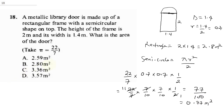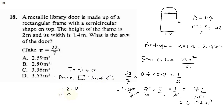To get the total area: total area = area of rectangle plus area of semicircle, which is 2.8 plus 0.77, giving us 3.57 meters squared. So the correct answer is D.